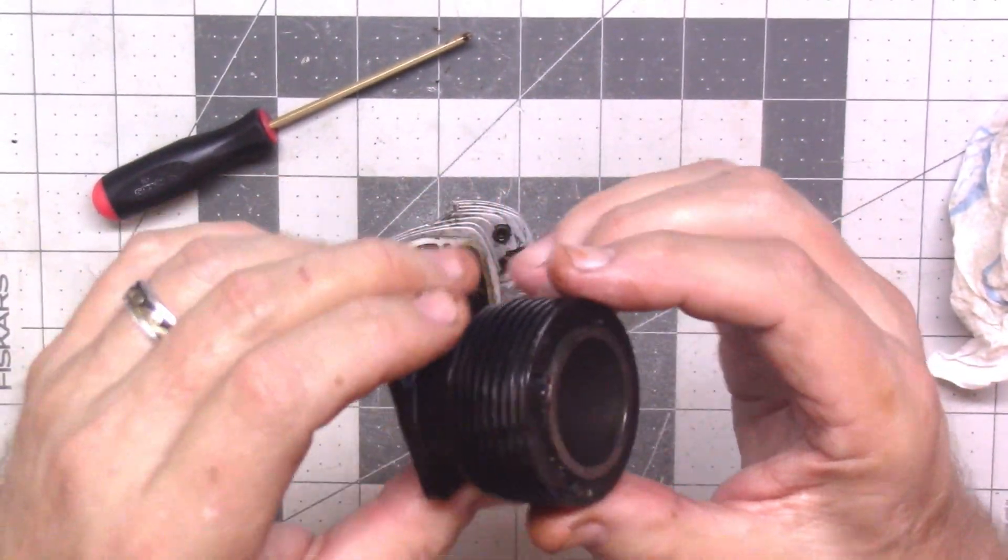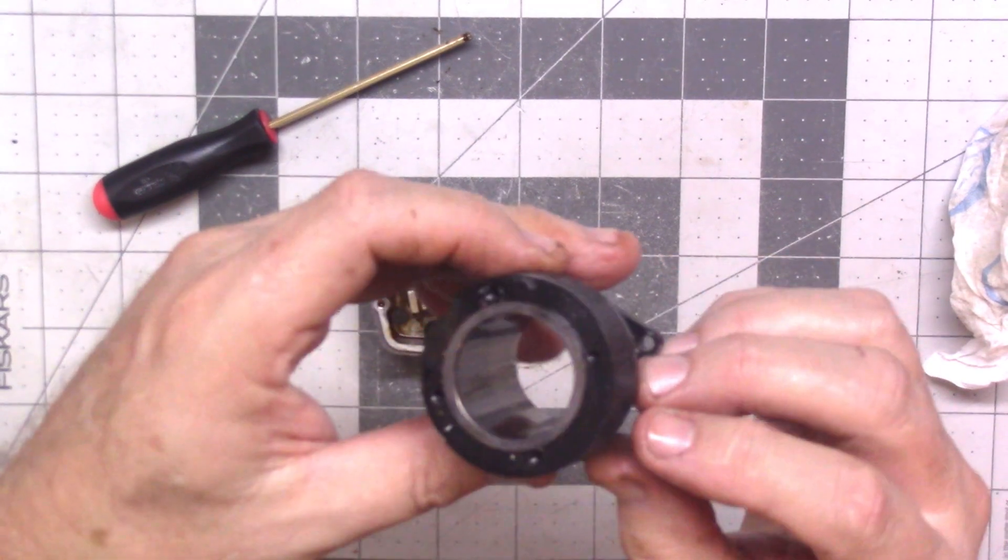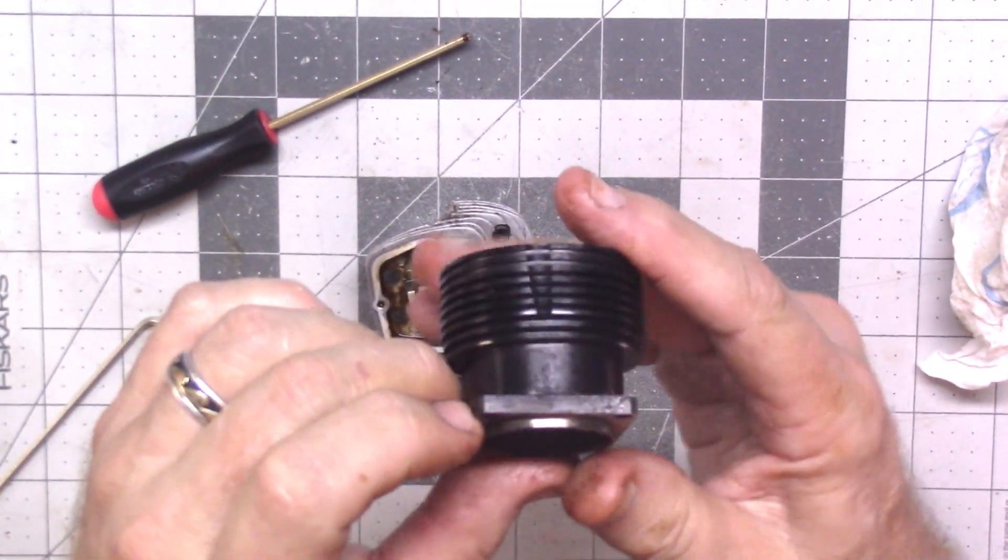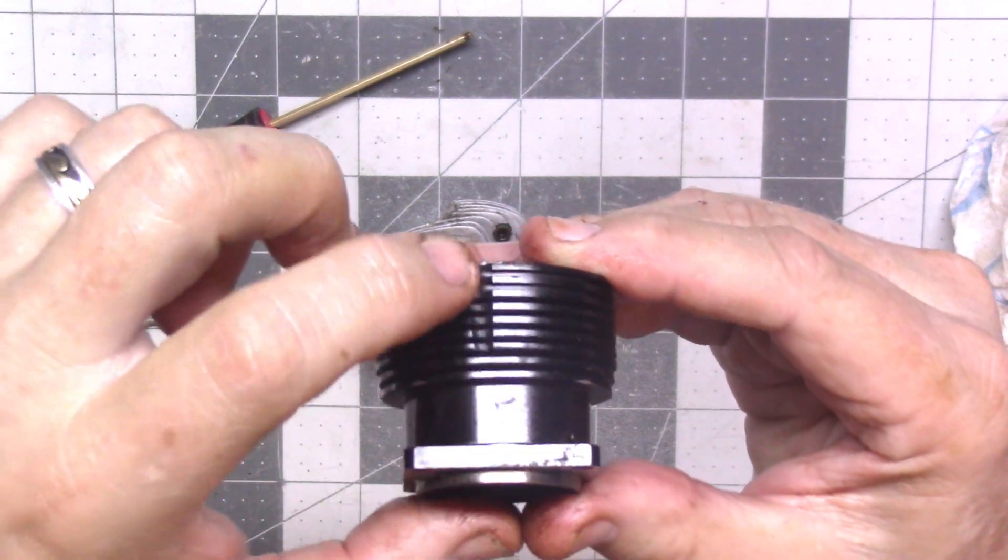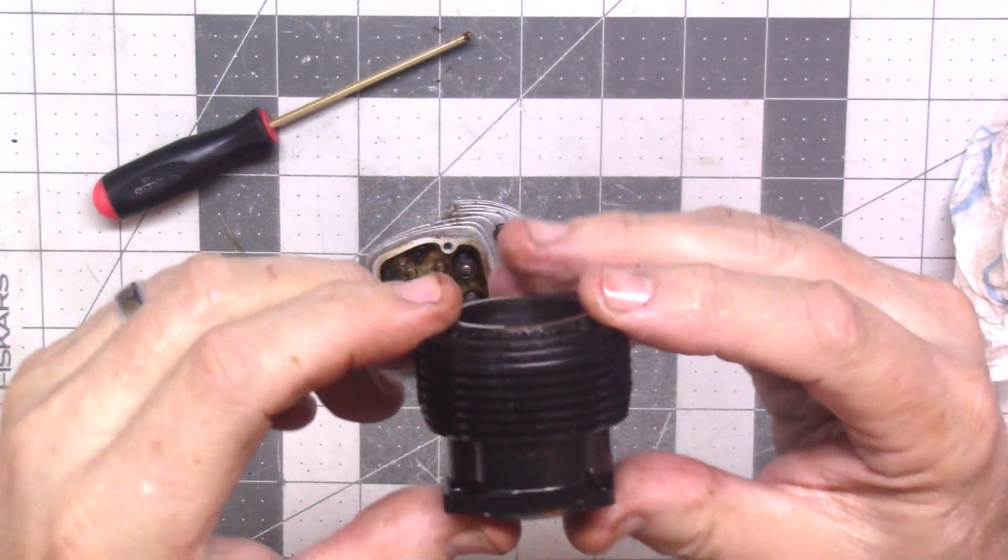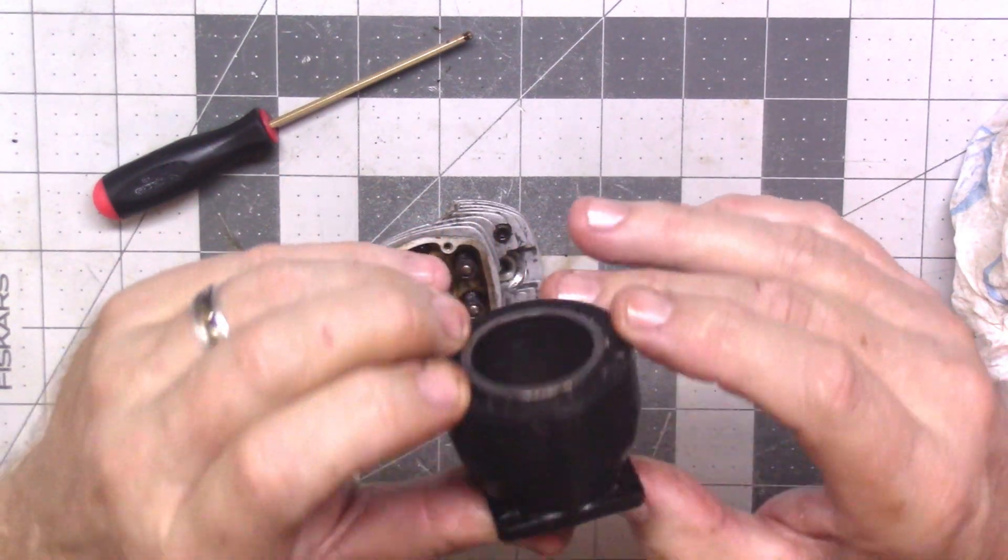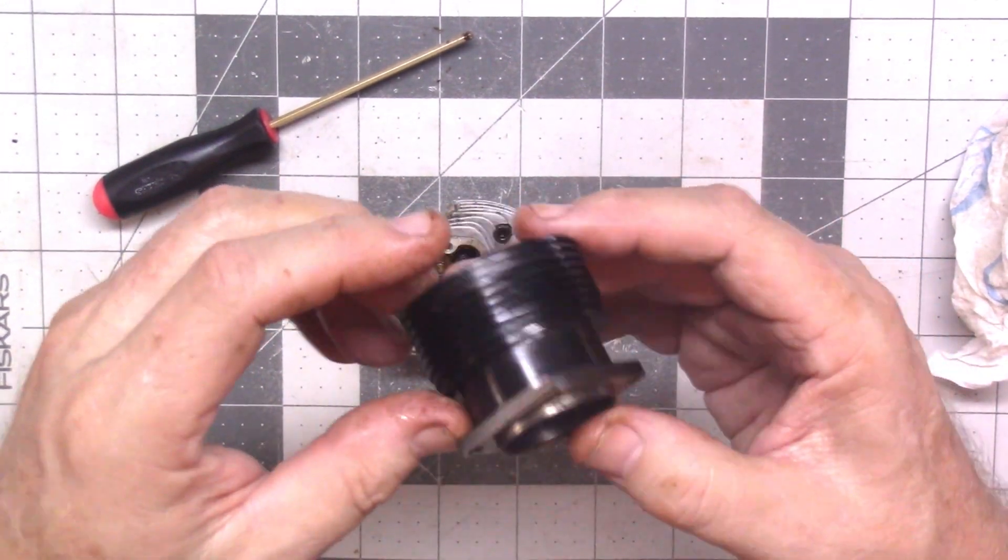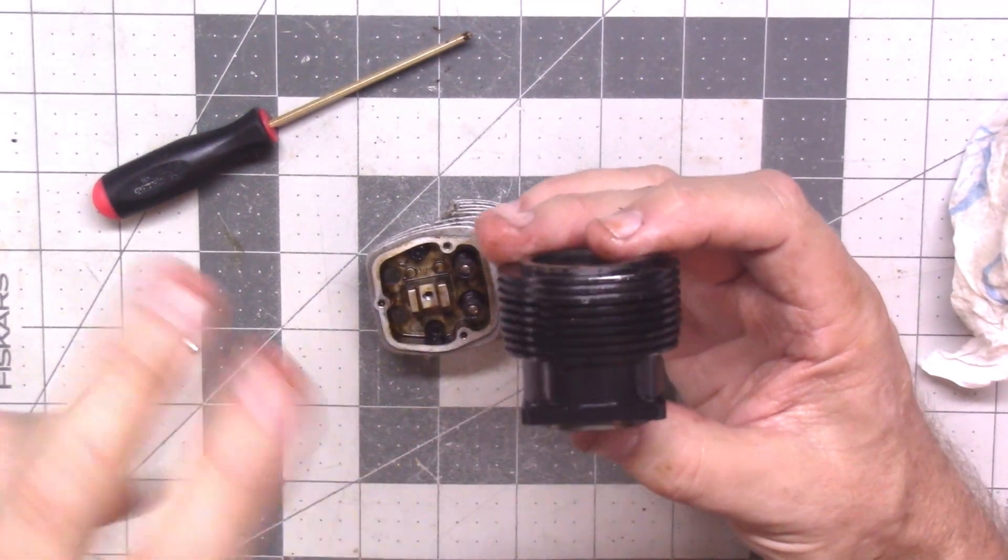Now, the one thing I am going to mention about this particular engine is, you see that, that's an orientation for one of the pushrod covers to go in there. So, it does have an orientation and that needs to be adhered to when you put it back together. But, the other three cylinders...